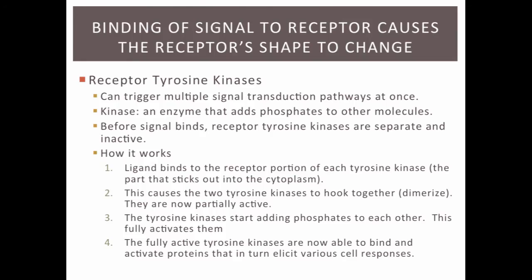Receptor tyrosine kinases are a different type of receptor found in the plasma membrane. They are special because they can trigger multiple signal transduction pathways at once. A kinase is an enzyme that adds phosphates to other molecules — this is called phosphorylation. When a molecule gets phosphorylated, it usually becomes activated. So by adding phosphates to other things, a kinase can activate other molecules.